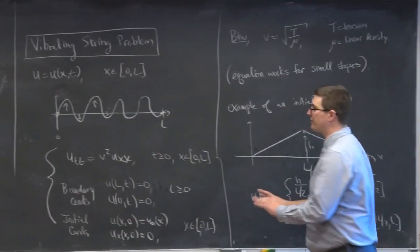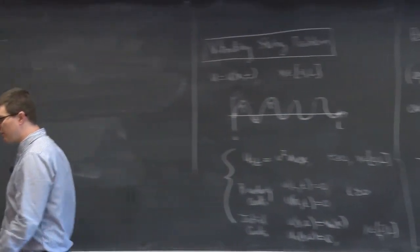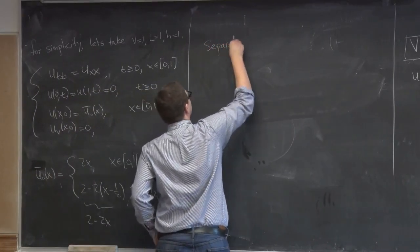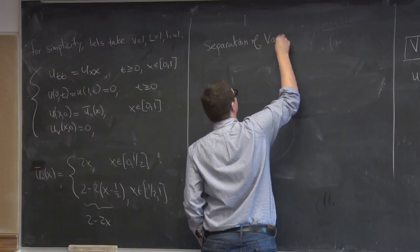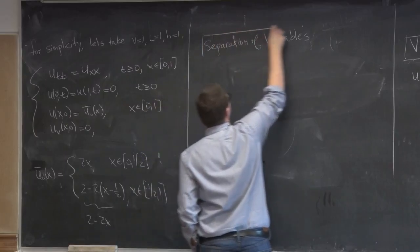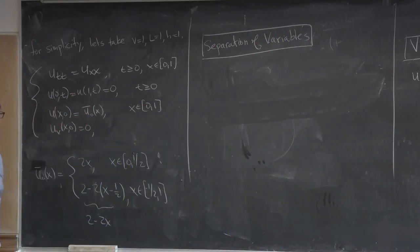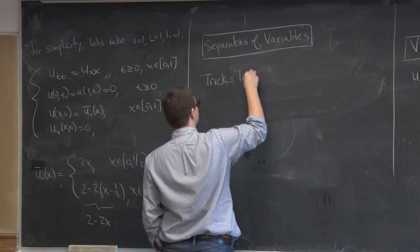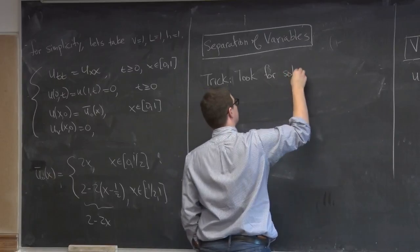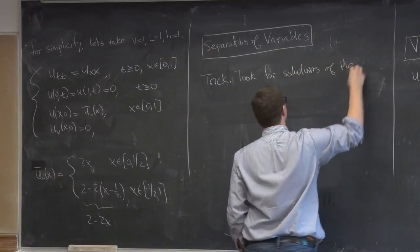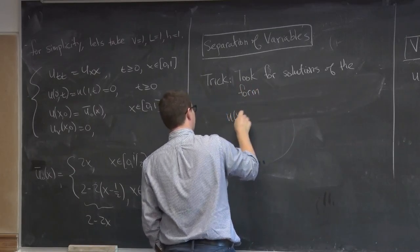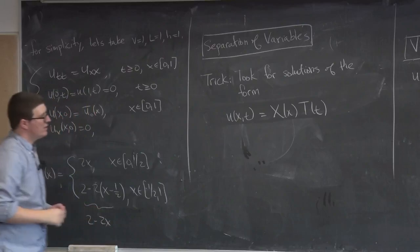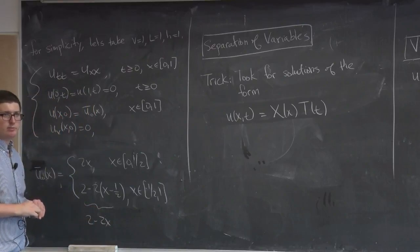The method for solving these things is called separation of variables. The trick is to look for a particular type of solution: we look for solutions of the form U(x,T) equals X(x) times T(T) — a function of one variable in x multiplied by a function of one variable in T.